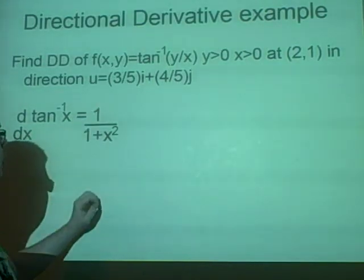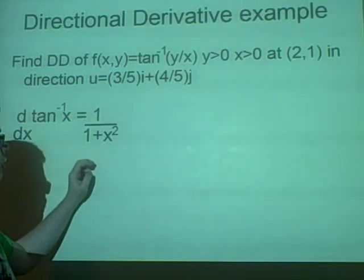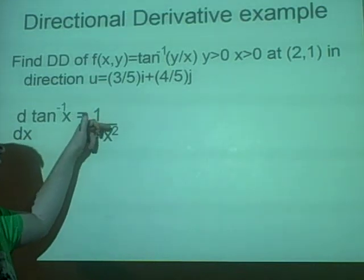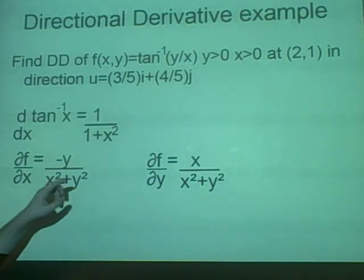And we multiply this by this, which will give you -y/(x²+y²), because this is y²/x². So the x²s just cancel, and you'll be left with this.